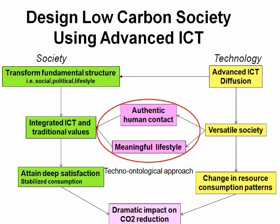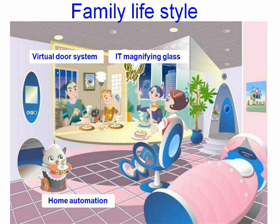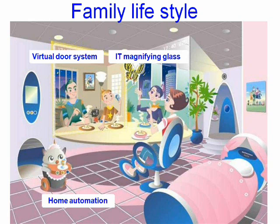The next slide shows an example of a life scene in a desired sustainable low-carbon society. This scene shows a future family lifestyle. In the current situation, self-actualization and family communication may not be compatible. For example, if the father is working away from home, then authentic family communication is impossible. However, using advanced ICT — for example, what we call a virtual door system — means communication between family members is increased. Home automation can also reduce people from routine tasks, thereby giving them time to enjoy a more meaningful life.